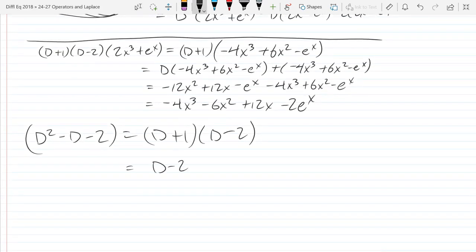I just showed that we saw an example where you can factor the polynomial and apply one operator at a time. Algebraically, is it true that D minus two times D plus one is the same as D plus one times D minus two? Yes. It's also true in calculus. What that means is operators are commutative. At least these operators are commutative.